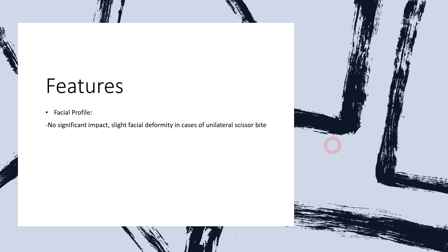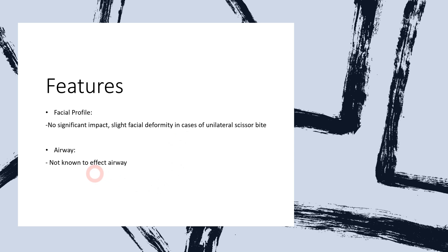If you talk about general features of a patient suffering from scissor bite, regarding facial profile, we may or may not note any significant facial deformity. However, in cases of unilateral scissor bite, we may appreciate slight facial deformity, but this is not as significant compared to other types of malocclusion such as cross bite, class 2, or class 3 malocclusion discussed in previous videos. Moving on towards airway, in cases of scissor bite there is no significant threat or any known disturbances to the patient's airway.